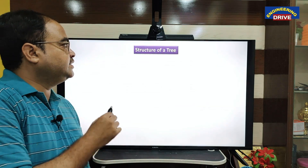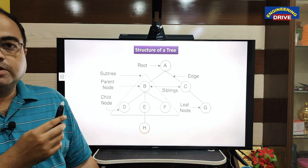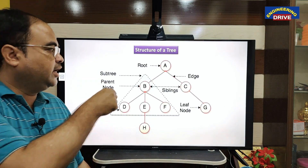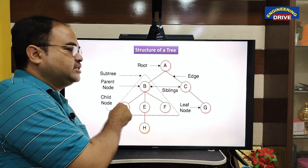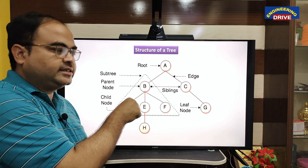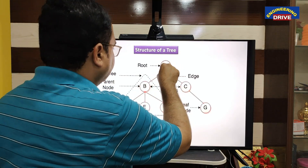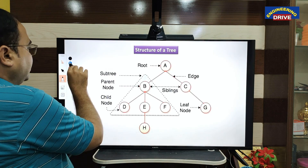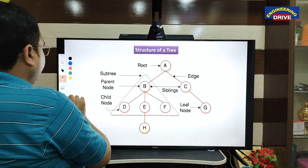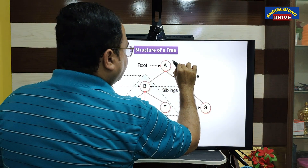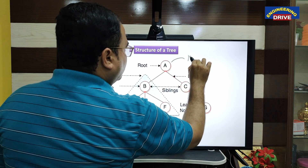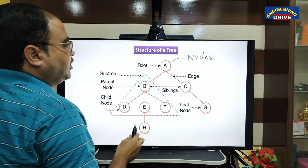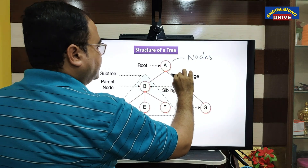This is a structure of a tree. How does a tree hold data? A tree holds data in the form of this structure. It consists of circles — these circles are nothing but nodes, we call them nodes. And the connecting lines are called edges.